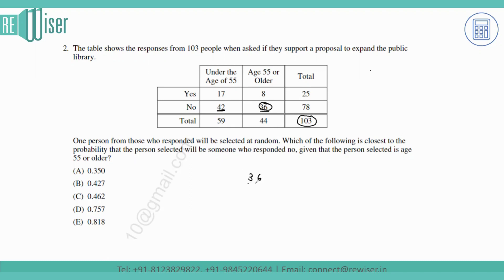The answer should be 36 over 44, which is 0.818. The correct option for this question is option E. Thank you, students.